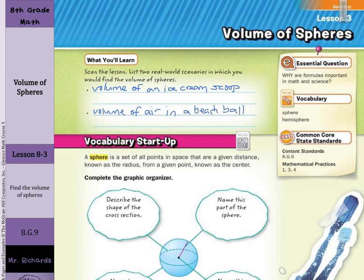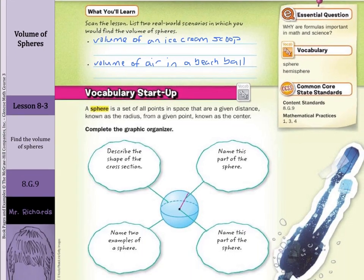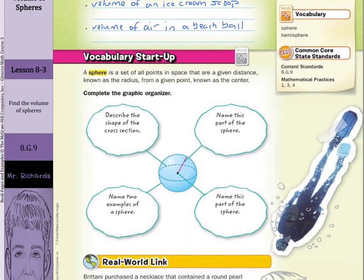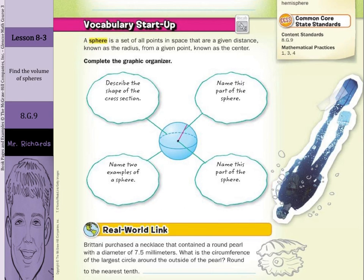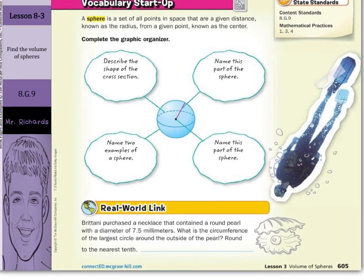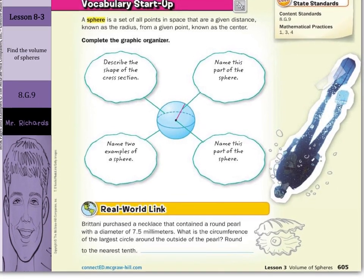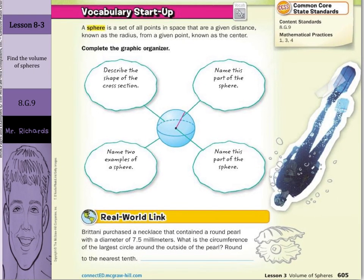Warm thoughts when I think of beach balls and oceans and sand and not the snow we have here now. So our vocabulary startup: a sphere is a set of all points in space that are a given distance, known as the radius, from a given point known as the center.